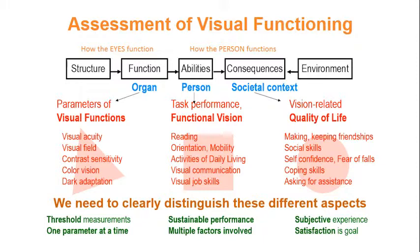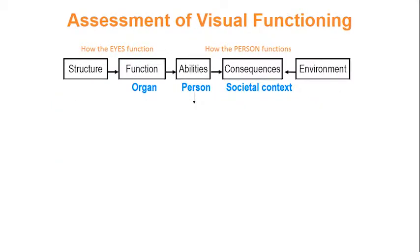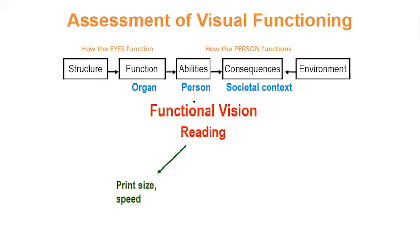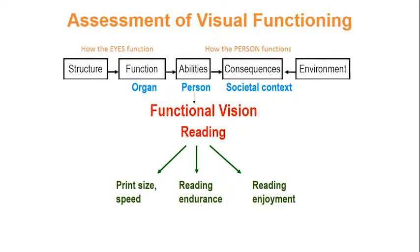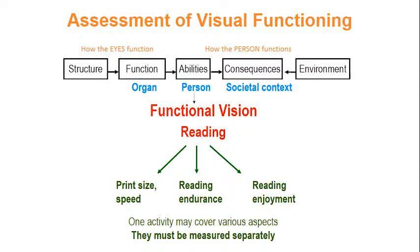Satisfaction is an important goal. When planning rehabilitation, we must realize that one activity can span several aspects. Let us take reading as an example. Print size and reading speed in words per minute reflect organ function. Reading endurance — how many hours a day someone can read — reflects an ability of the person. Reading enjoyment, finally, is a component of quality of life. Because these are different aspects, we need to assess them separately and with different tools. We cannot predict reading enjoyment from measuring print size and reading speed.